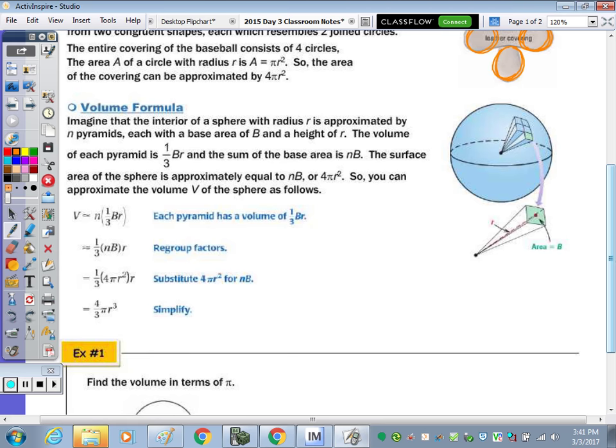For volume, imagine that the interior of the sphere with a radius r is approximated by n pyramids, with each of a base area of B and a height of r. So in these pyramids, this dimension here, the radius, is the height of each one of those pyramids. The volume of each pyramid is one-third area of the base times the height, which is your radius. And then if we add all of that up, it would be the number of pyramids times the base area. The surface area of a sphere is approximately equal to nB, or 4πr².